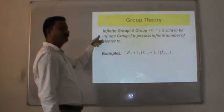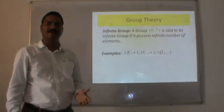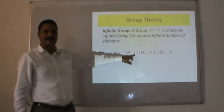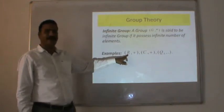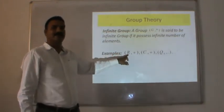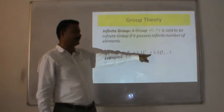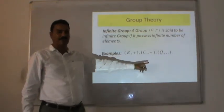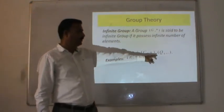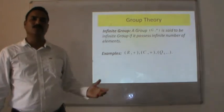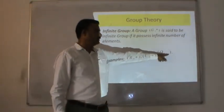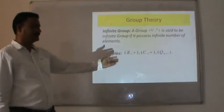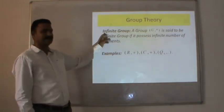Infinite group: a group (G, *) is said to be an infinite group if it possesses an infinite number of elements. For example, the set of real numbers with addition always forms a group and is infinite. Similarly, (C, +) where C is the set of complex numbers also forms an infinite group. Also, Q₀ with multiplication (where Q₀ denotes non-zero rational numbers) also forms a group and is another example of an infinite group.